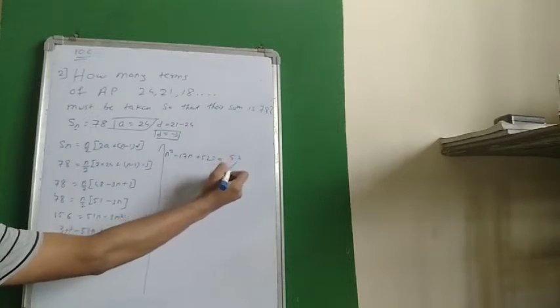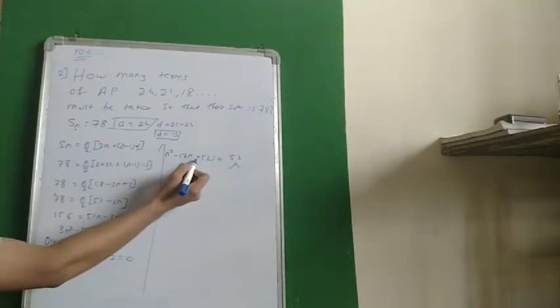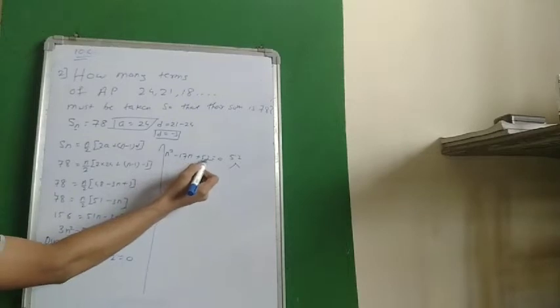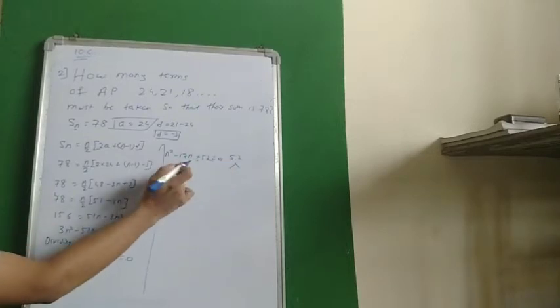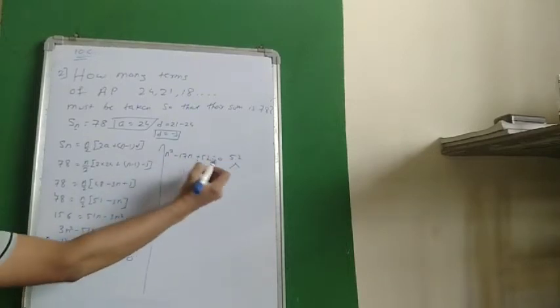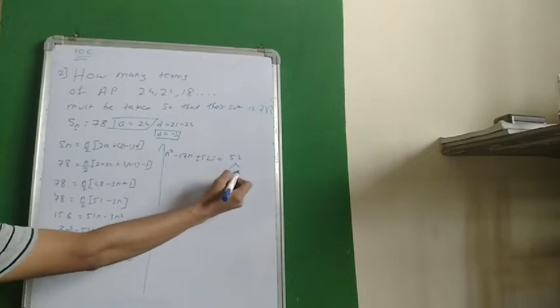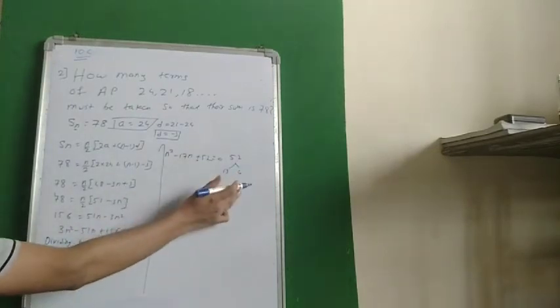We need to split 52 such that in multiplication we should have 52, but in addition we should have 17. So it is 13 times 4 is 52.